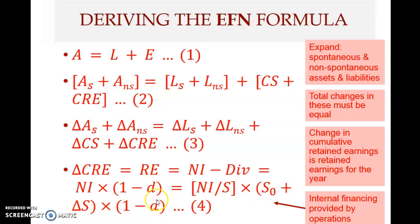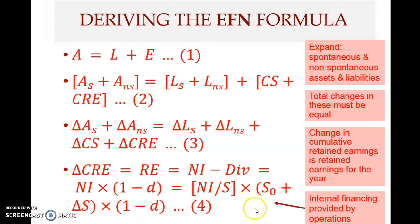So retained earnings equals profit margin multiplied by the new level of sales, multiplied by one minus the dividend payout ratio. This represents the internal financing provided by operations. You need to remember this formula.